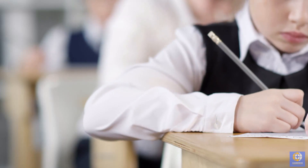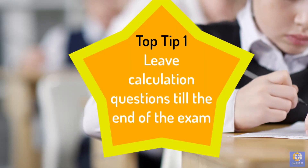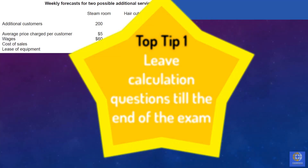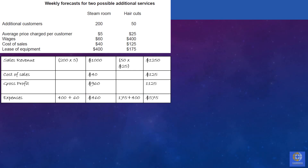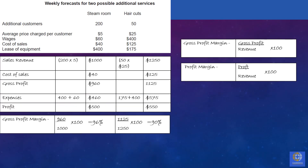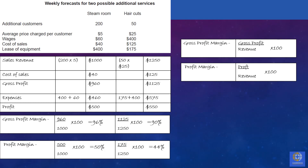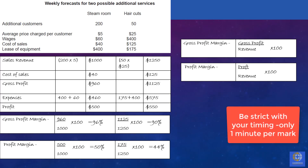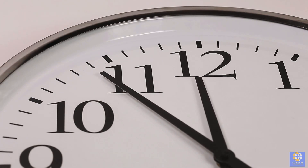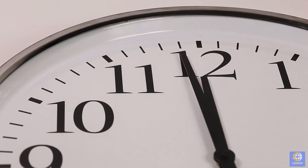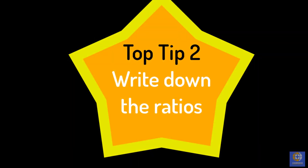Top tip one: skip calculations until the end of the paper. With this question there are eight different calculations to complete, and in some questions even more. You only have 12 minutes for these 12-mark questions, so students can easily spend 15 to 20 minutes on them without realizing, missing marks on other questions. Skip the calculation questions, leave time at the end, come back to them, and you won't run out of time or impact your performance on the rest of the paper.